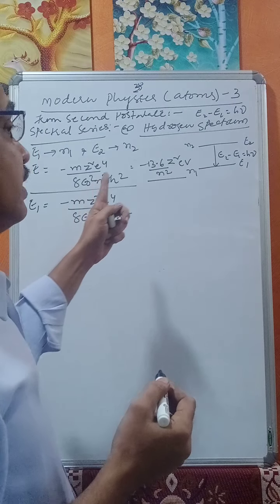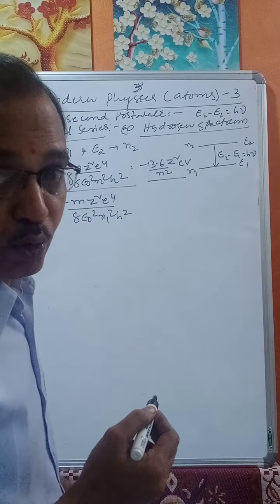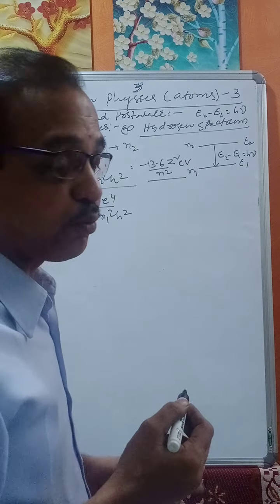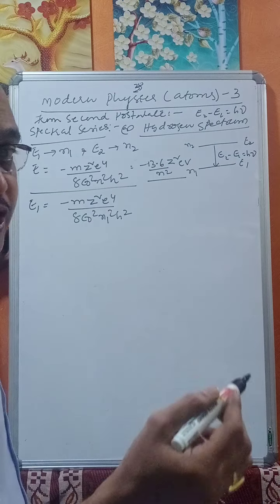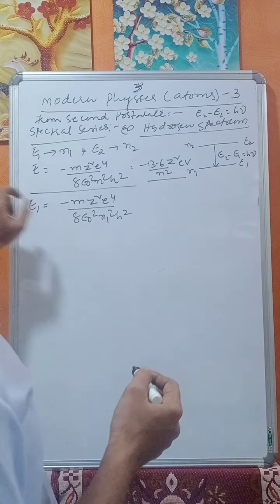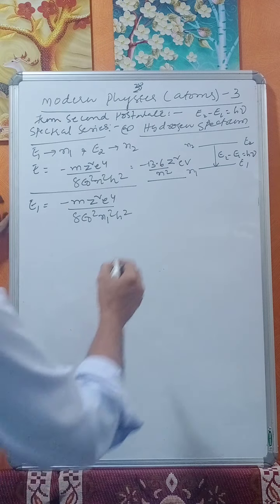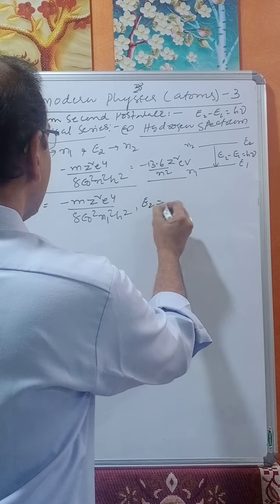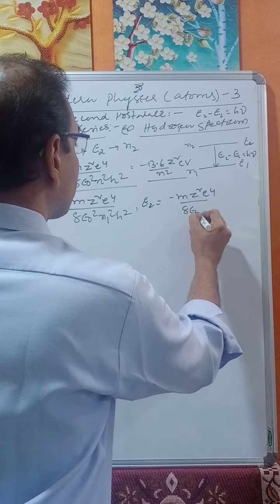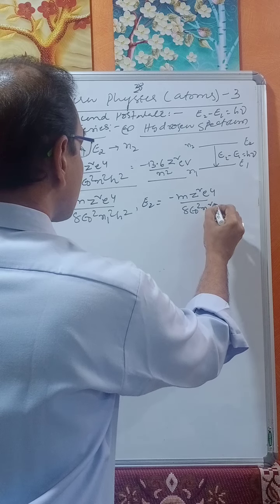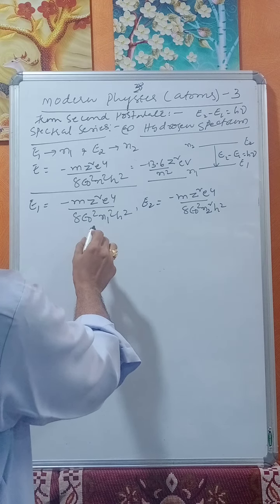I am not taking hydrogen only — I am considering the general case. For singly ionized helium, we take z equals 2; for doubly ionized lithium, z equals 3. Therefore E1 equals minus m·z²·e⁴ by 8·ε₀²·n1²·h², and E2 equals minus m·z²·e⁴ by 8·ε₀²·n2²·h².